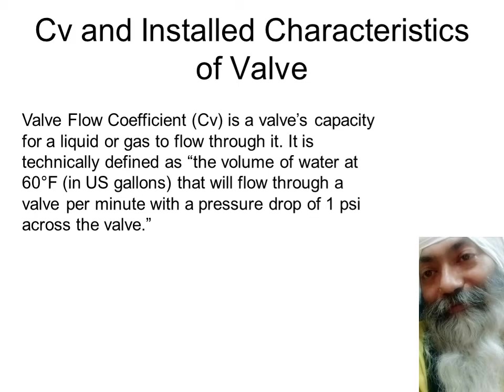CV stands for valve flow coefficient — C stands for coefficient, V stands for valve. It is the valve's capacity for liquid, or in some cases for gases, to flow through it. It is technically defined as the volume of water — water because its specific density and viscosity are all known — at 60 degrees Fahrenheit. The flow should be in US gallons per minute.